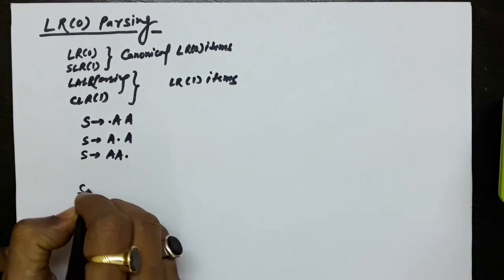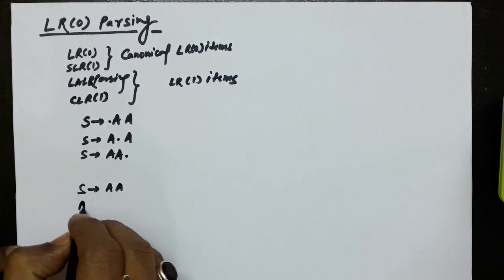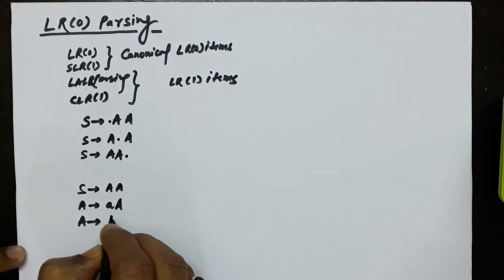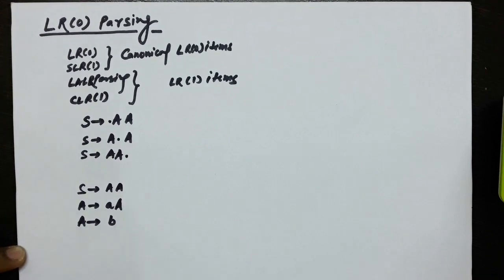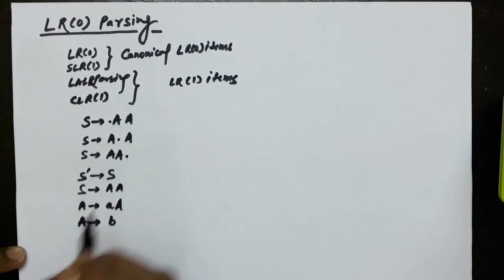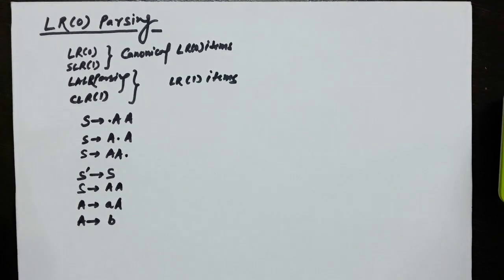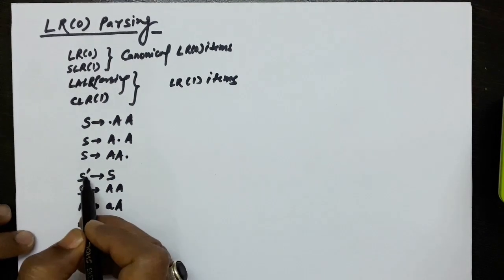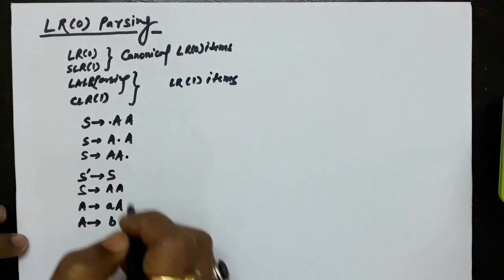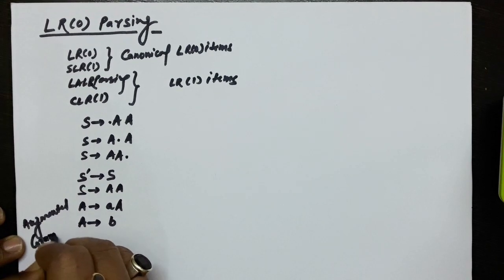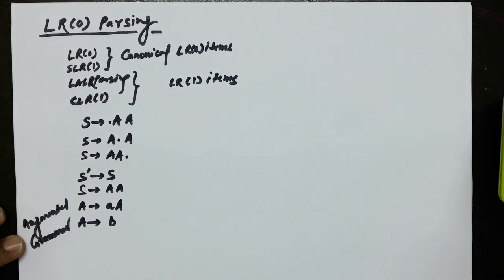Suppose we have a grammar: S produces AA, A produces small a capital A, and capital A produces small b. For LR parsing, we add an extra production from our side: S-dash produces S, which produces the start symbol. So the augmented grammar consists of all four productions: S-dash produces S, S produces AA, A produces small a capital A, and A produces small b. Adding this new production makes it the augmented grammar.